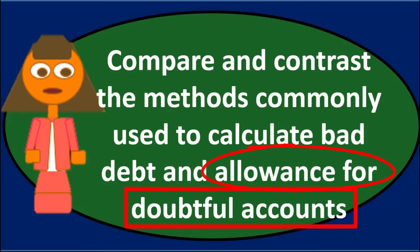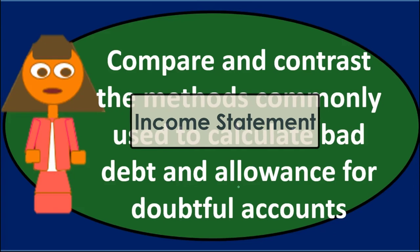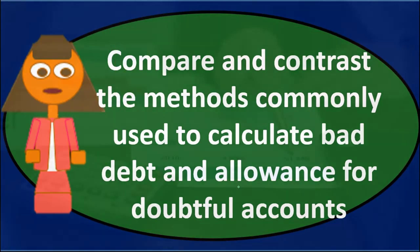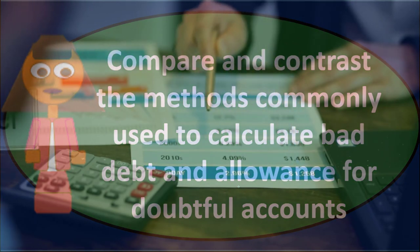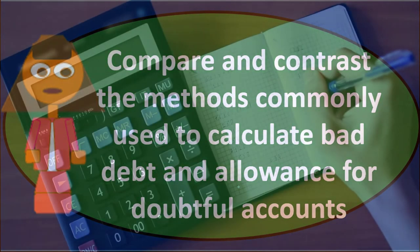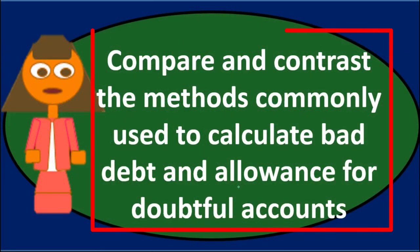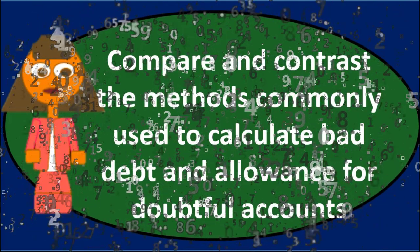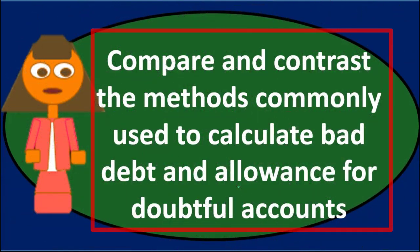The credit again goes to the allowance for doubtful accounts, which also improves balance sheet accuracy, but the income statement side is the primary focus. These two methods typically will not produce the same exact answers — one focuses on making the balance sheet more correct, and the other on making the income statement more correct. Both are estimates and will generally differ.